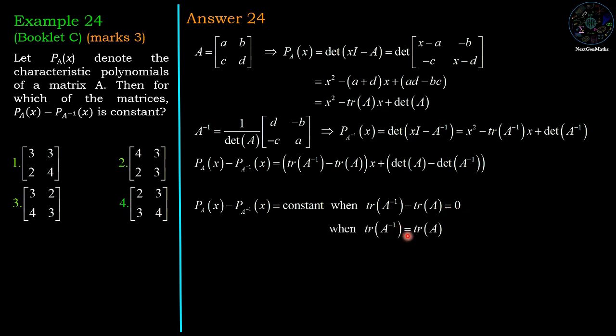In other words, trace of A inverse is equal to trace of A. Trace of A inverse is the sum of the diagonals of A inverse, so (d plus a) divided by determinant of A, and trace of A is a plus d.